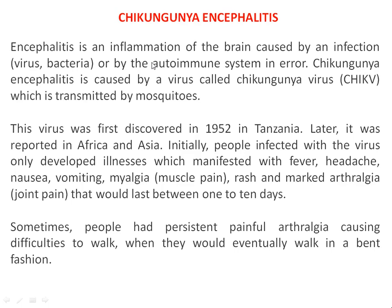Sometimes it is also caused by autoimmune disorder — an error in the immune system. Chikungunya encephalitis is caused by the Chikungunya virus, transmitted by mosquitoes. This virus was first discovered in 1952 in Tanzania and later reported in Africa and Asia. Initially, infected people developed illness manifested as fever, headache, nausea, vomiting, myalgia, rashes on the skin, and marked arthralgia lasting 1 to 10 days. Sometimes people had persistent painful arthralgia causing difficulty walking, and they would walk in a bent fashion.